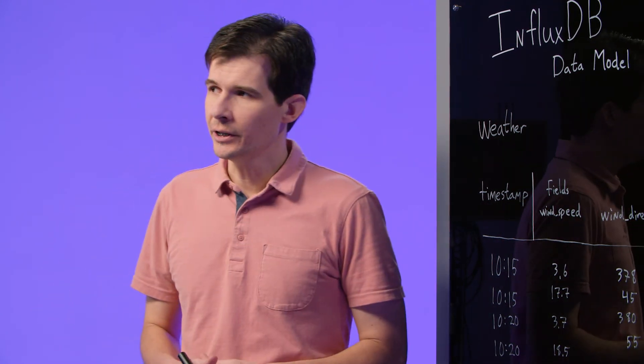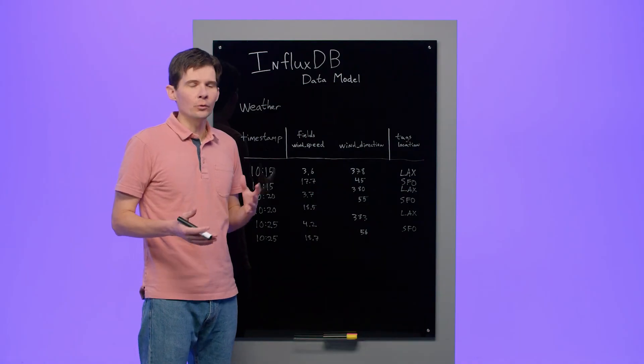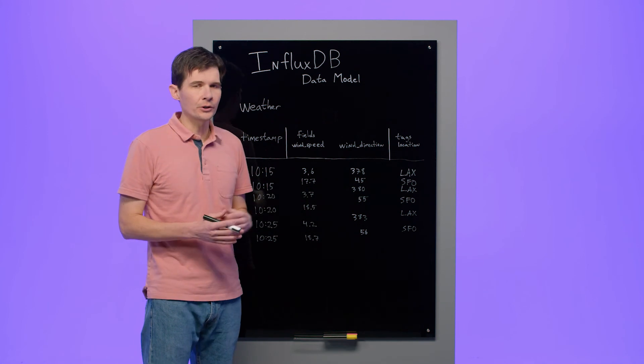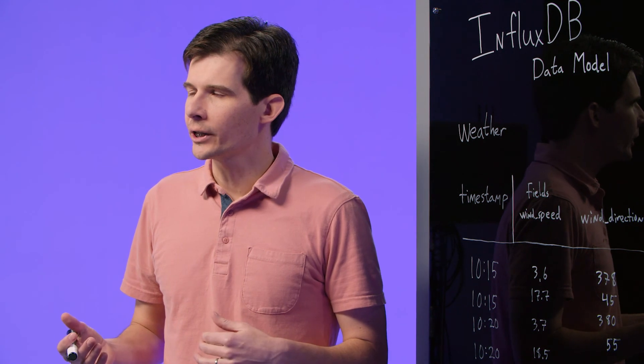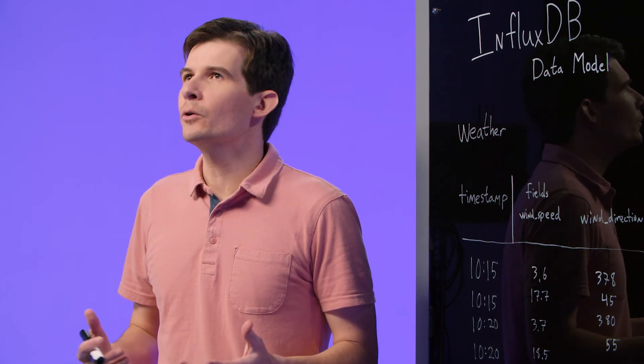The timestamp exists for all data stored in InfluxDB. This is time series data after all. Internally, we use the timestamp to sort or order this data so that it's always stored in time order. Fields are the data that vary over time. This is the information that's most interesting for our application, for our users.